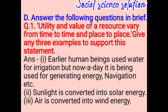Answer the following question: The utility and value of resources vary from time to time and place to place. Give any three examples to support this statement. Earlier, human beings used water only for irrigation, but nowadays it is being used for generating energy, navigation, etc. Sunlight is converted into solar energy. Air is converted into wind energy.